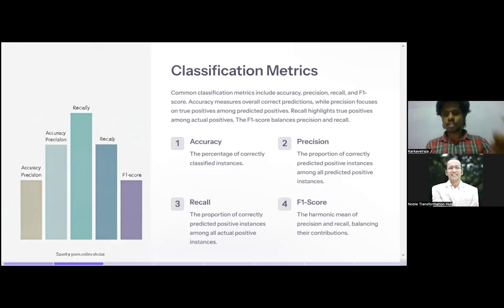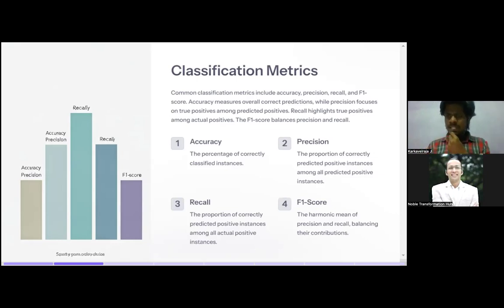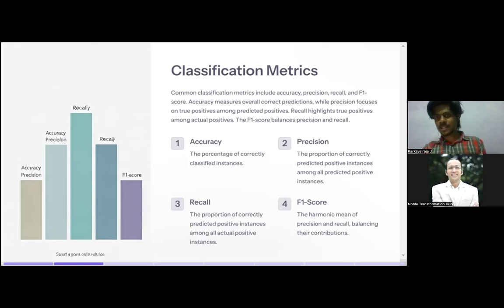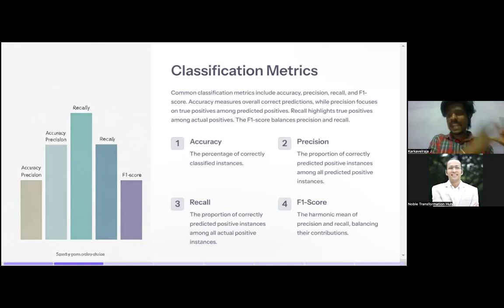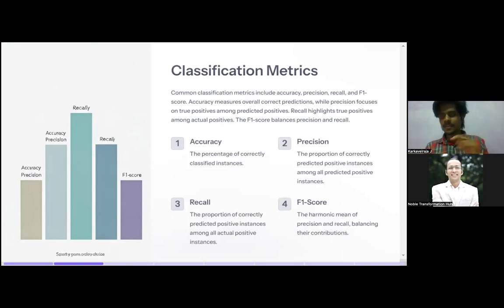Precision is the proportion of correctly predicted positive instances among all predicted positive instances — it only considers the positive class. For example, in a heart disease prediction dataset, if the model predicts 100 samples as not having heart disease (our positive class), but only 80 of those actually match the true data, then precision is 80%. Out of 100 predicted positives, only 80 are correctly positive. That kind of evaluation is called precision.